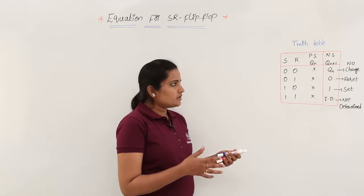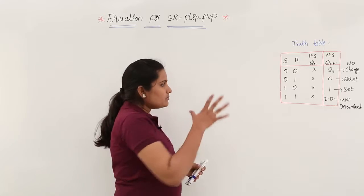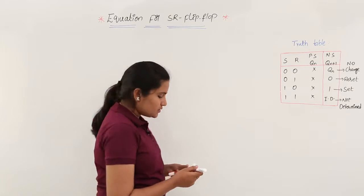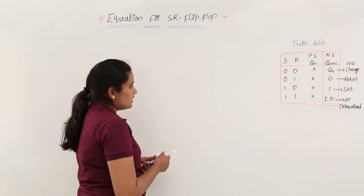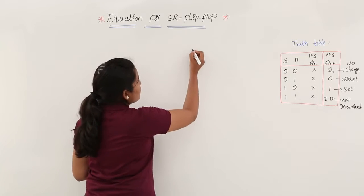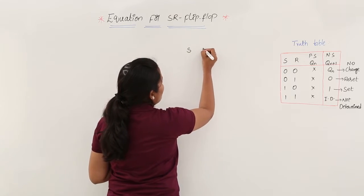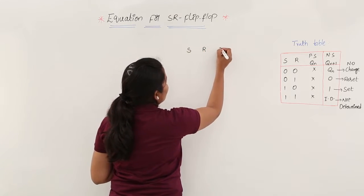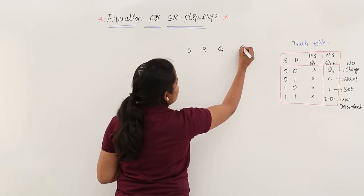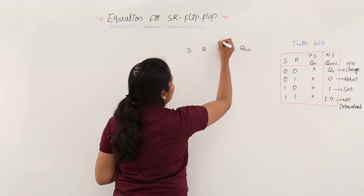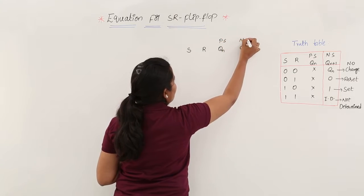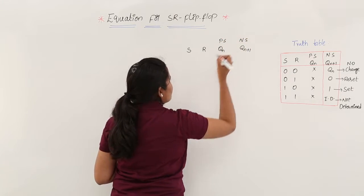Now for getting the equation, I am elaborating this truth table. Here I am rewriting the truth table with columns SR, QN (present state), and QN+1 (next state). N.S represents next state.